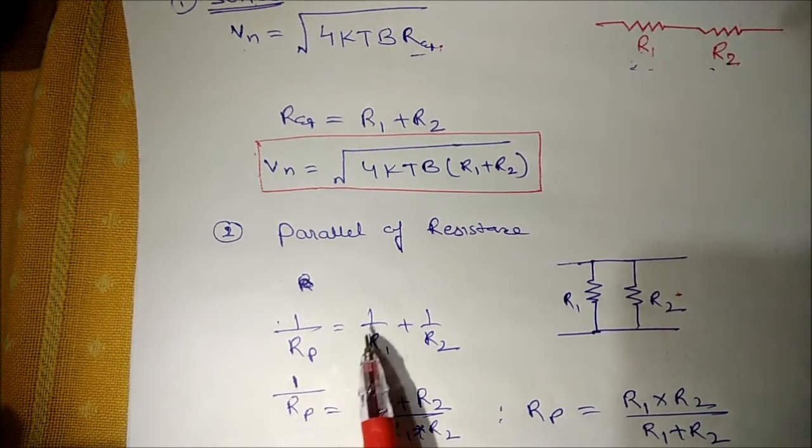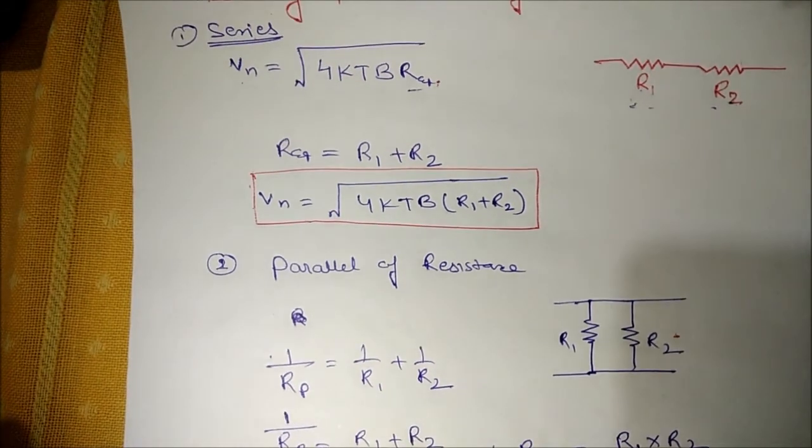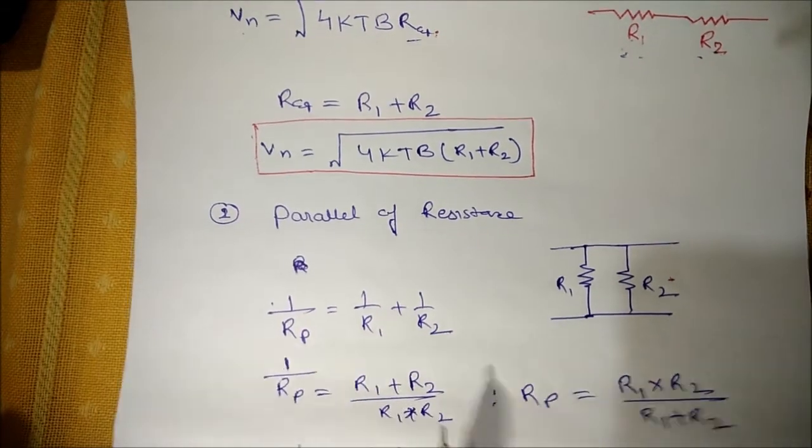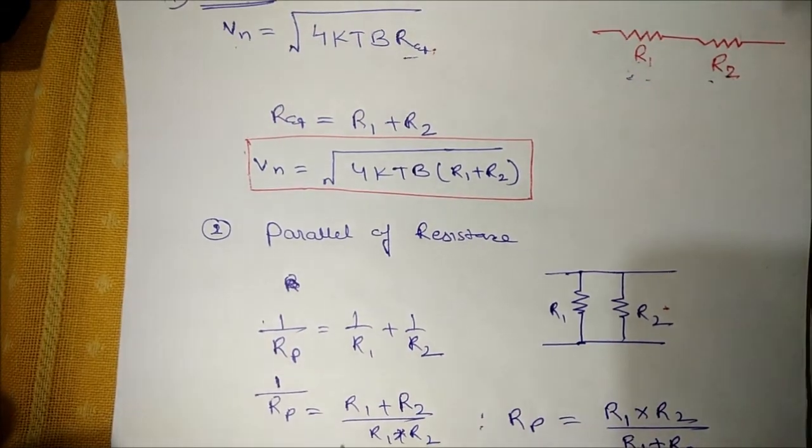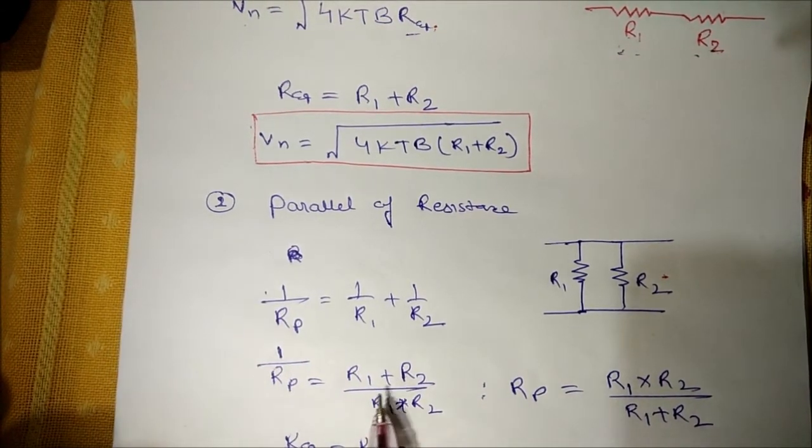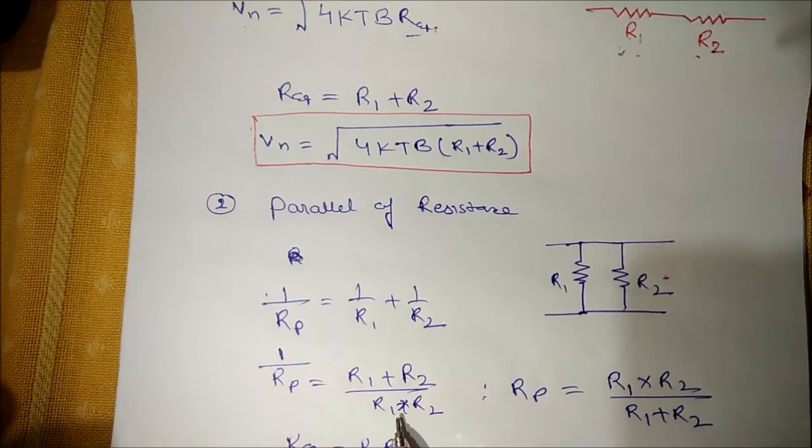1 upon Rp is given as 1 upon R1 plus 1 upon R2. So here 1 upon Rp is given as R1 plus R2 upon R1 into R2.